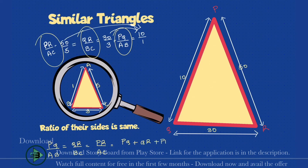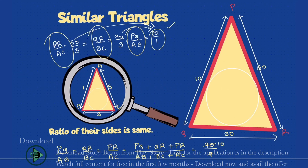Not only that — if I take the sum of the sides of both triangles, PQ plus QR plus PR divided by AB plus BC plus AC, the ratio of their perimeters will also be the same. That's 50 plus 30 plus 10 = 90, divided by 5 plus 3 plus 1 = 9, which gives 90 divided by 9 = 10 again. So the perimeter ratio is also a result you can remember.